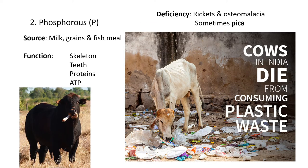The second mineral we're going to look at is phosphorus — P is the symbol. A good source would be milk, any grain feed for the animal, and fish meal. Those are three nice sources of phosphorus. A function of it is also a strong skeleton, healthy teeth, to build proteins, and also ATP.